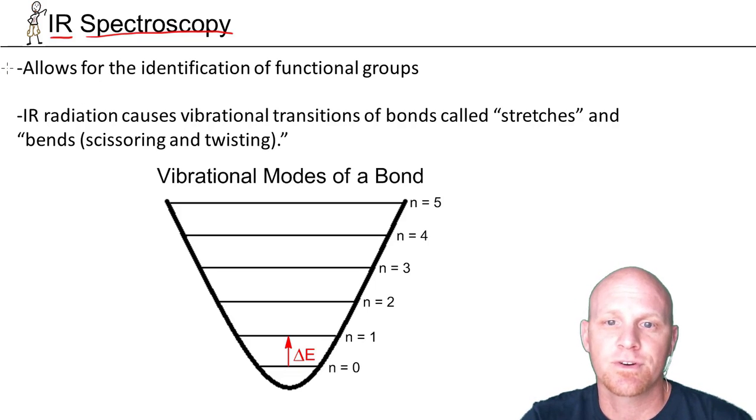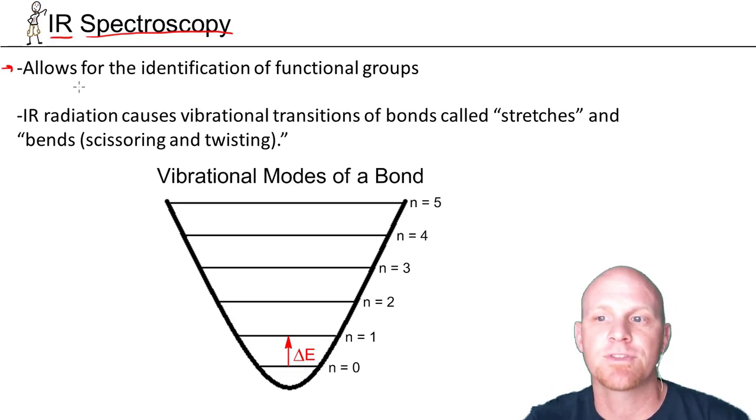Infrared spectroscopy allows for the identification of functional groups in a molecule. That's the big thing we learn. Most of the time, we're not going to get an entire structure of a molecule from the infrared spectrum, but we'll figure out what functional groups are part of that molecule.